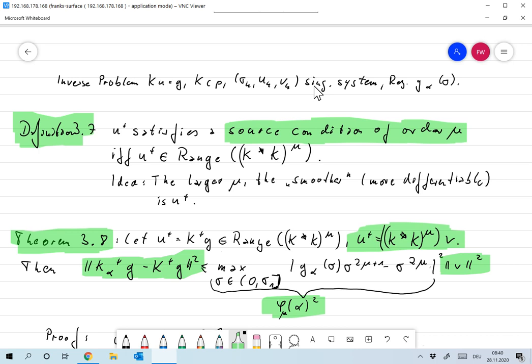So we say that in definition 3.7, U+ satisfies a source condition of order μ if and only if U+ is in the range of K* K to the order of μ. And we allow for μ to be real, and we'll see what that means a little bit later.